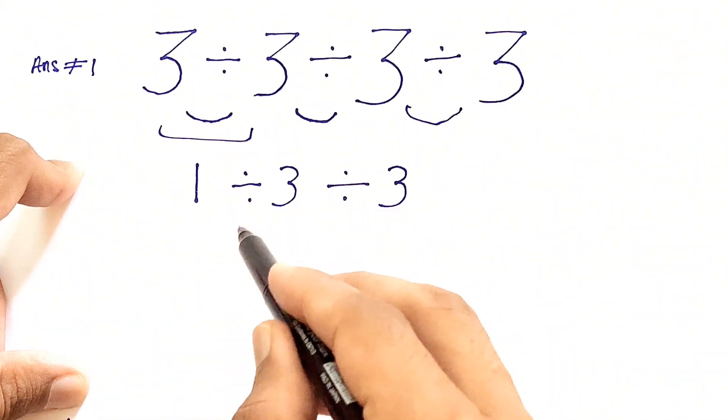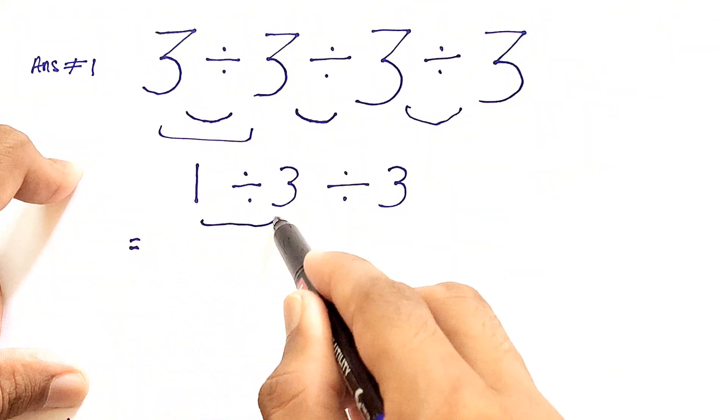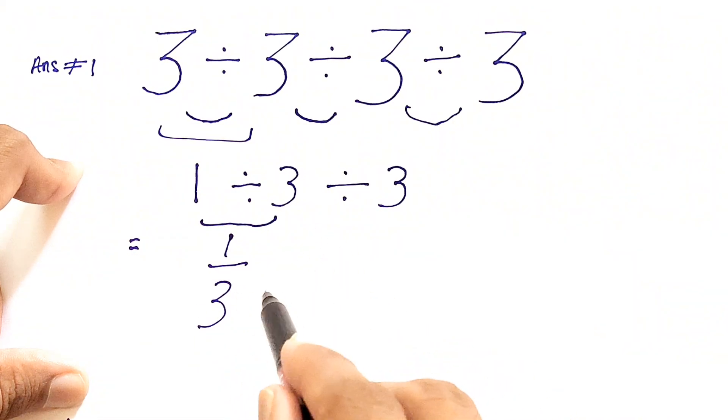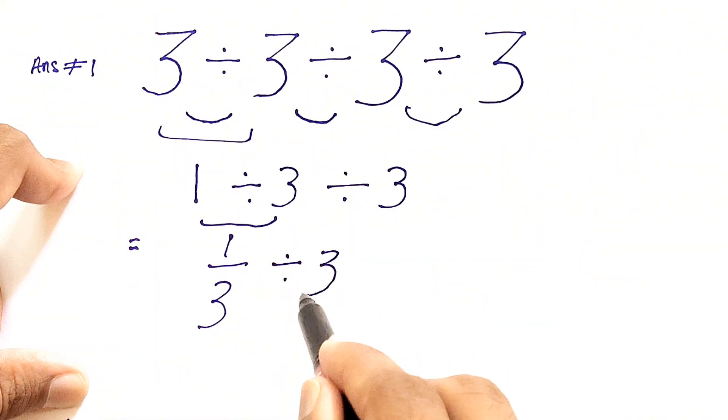Now, as we have seen in the previous video, we can write 1 divided by 3 in the form 1 by 3. So we can write in this form. Now we'll write the remaining, which is divided by 3.